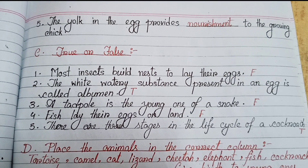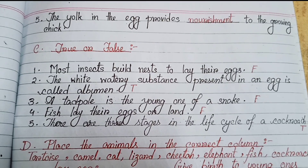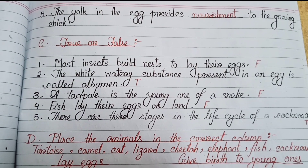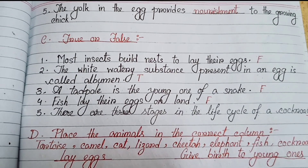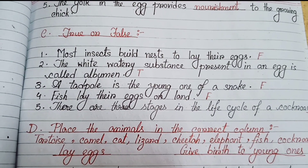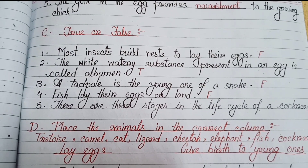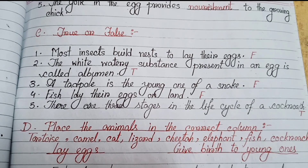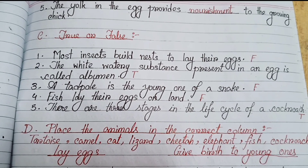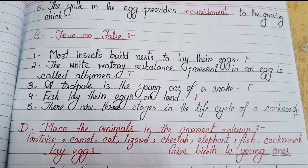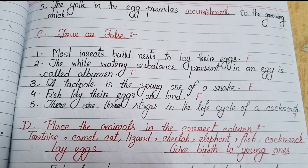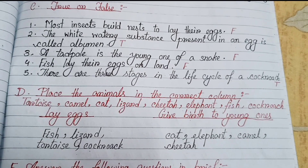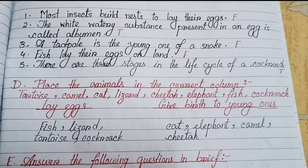Number three (c): True or False. (1) Most insects build nests to lay their eggs — False. (2) The white watery substance present in an egg is called albumin — True. (3) A tadpole is a young one of a snake — False. (4) Fish lay their eggs on land — False. (5) There are three stages in the life cycle of a cockroach — True.